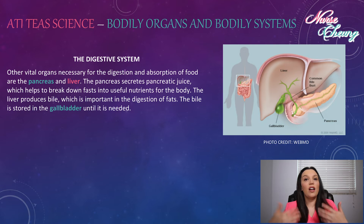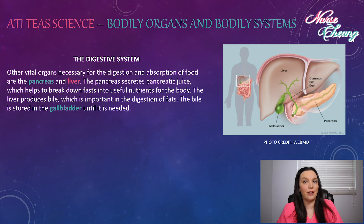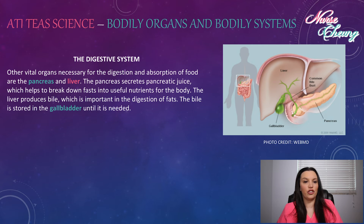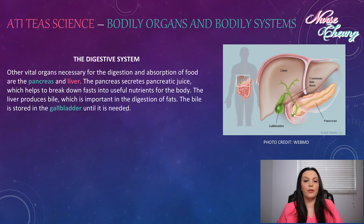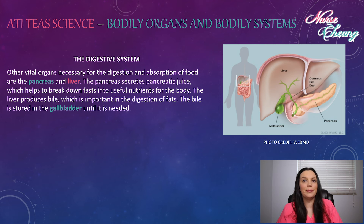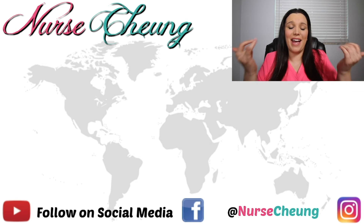Lastly, other vital organs necessary for digestion and absorption of food are the pancreas and the liver. The pancreas secretes pancreatic juice, which helps break down fats into useful nutrients in the body. The liver produces bile, which is important in the digestion of fats. The bile is stored in the gallbladder until it's needed.